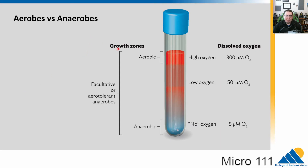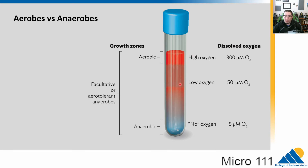Here's an example tube with different concentrations of dissolved oxygen. At the top there's a lot of oxygen; as you go down, the oxygen concentration decreases; and at the bottom there is essentially no oxygen. Strict aerobes would grow at the top but could not grow in the lower areas. Anaerobic organisms would need to grow down at the bottom.